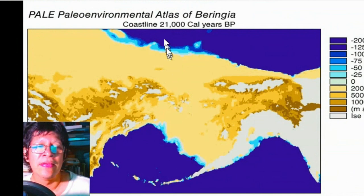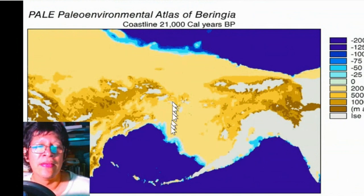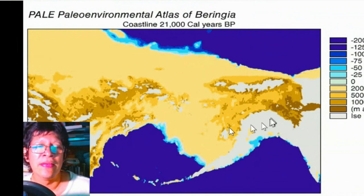21,000 years ago this was a land bridge, and the name of this land was Beringia. There were icebergs and the water was frozen, so the levels of the sea came down and as a result an area of dry land appeared, so people from Asia were able to cross the bridge.